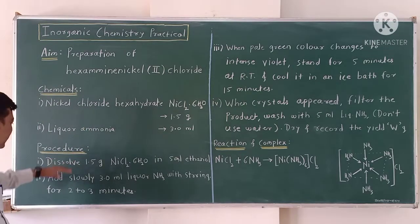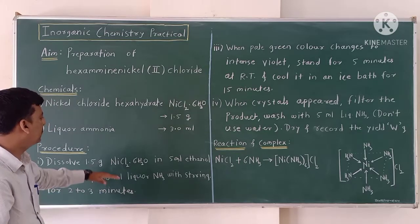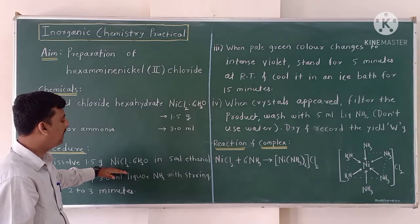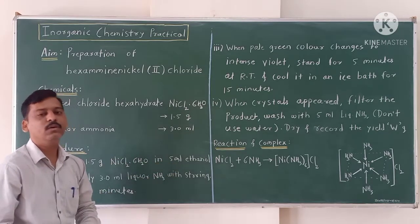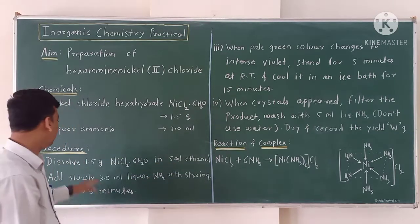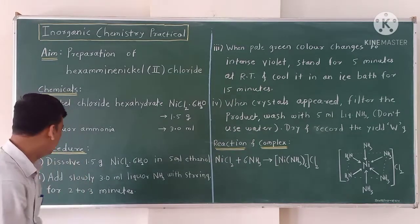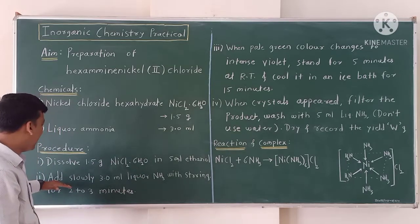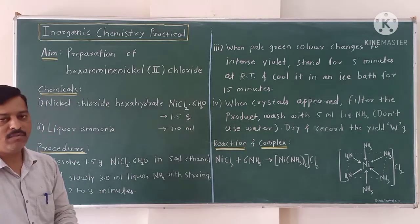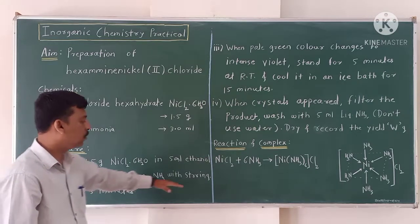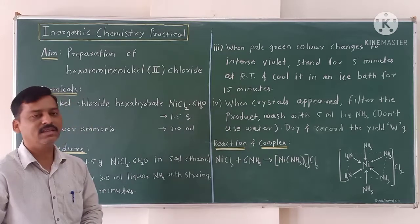Let us consider the procedure. Dissolve 1.5 grams of nickel chloride hexahydrate in 5 ml of ethanol. Stir it very well so that the nickel chloride hexahydrate dissolves completely into the ethanol. Then we have to add 0.3 ml of liquor ammonia very slowly with constant stirring.